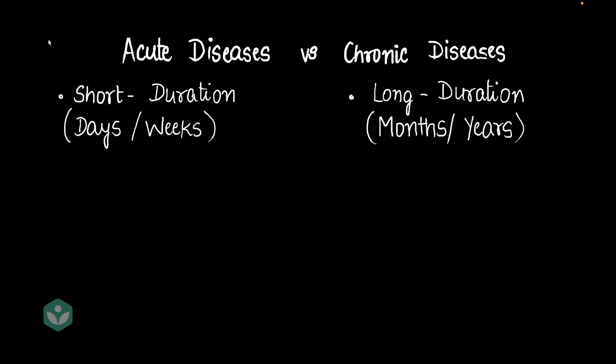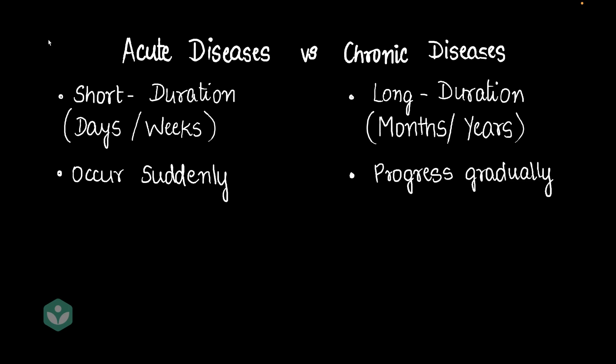Acute diseases occur suddenly. For example, a fracture could have occurred suddenly due to an accident. On the other hand, chronic diseases progress gradually. Slowly over time, the disease increases and builds up.